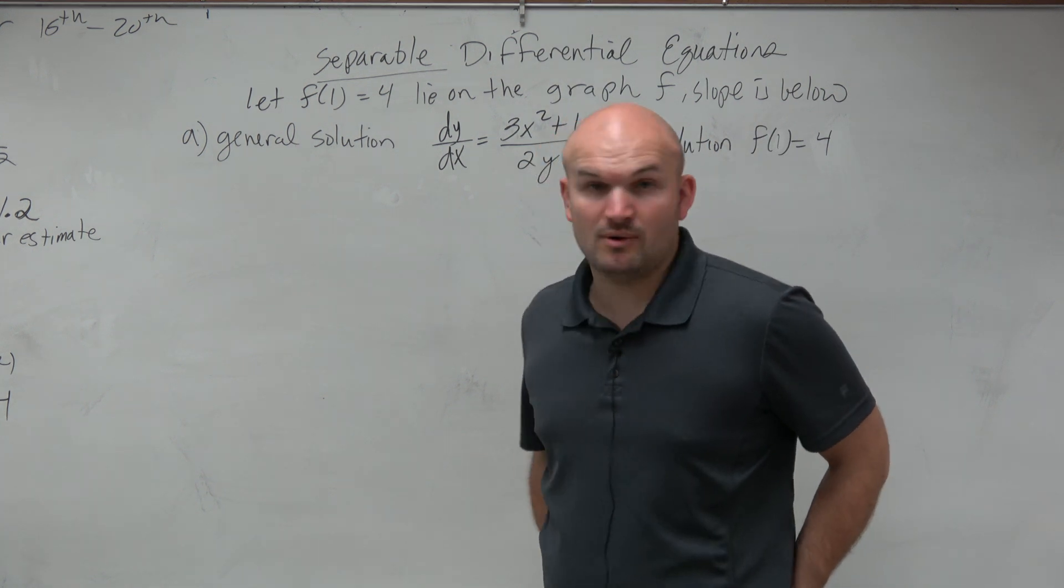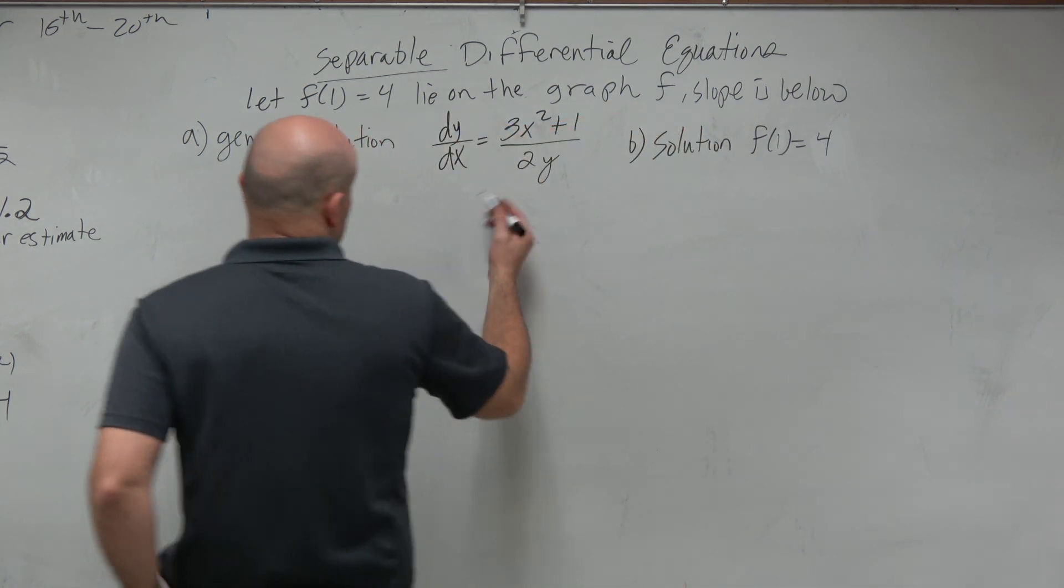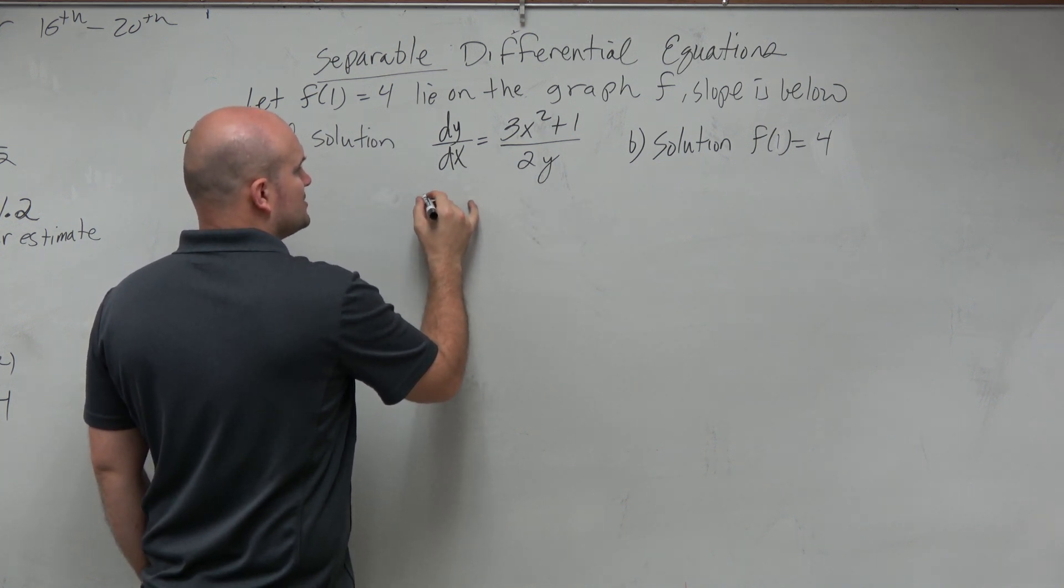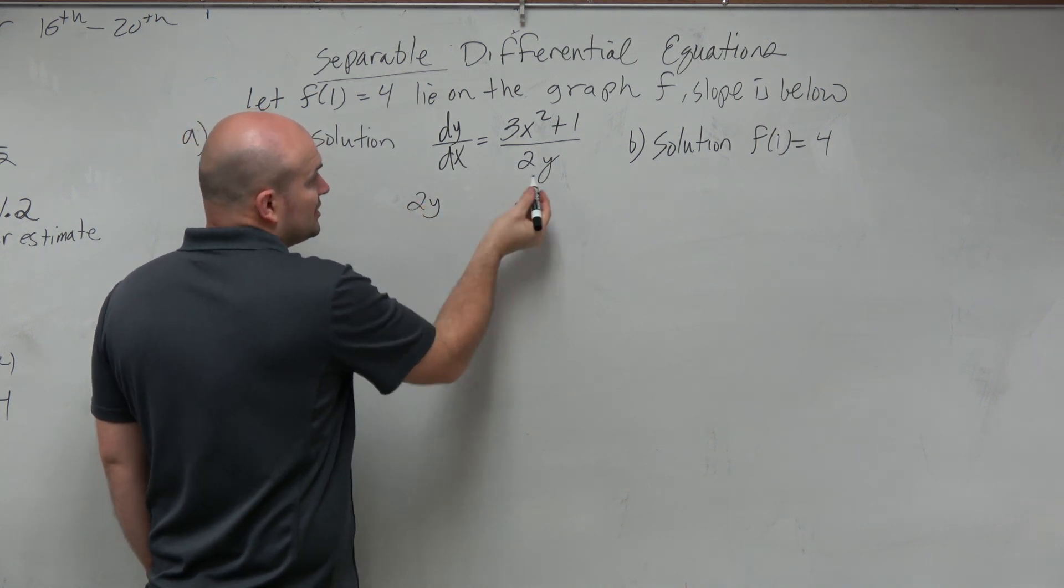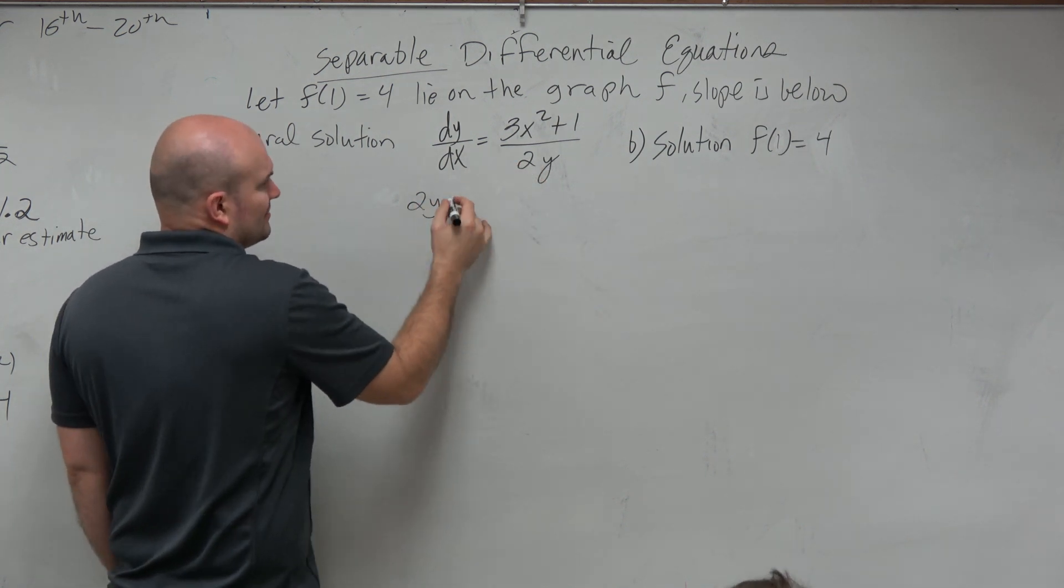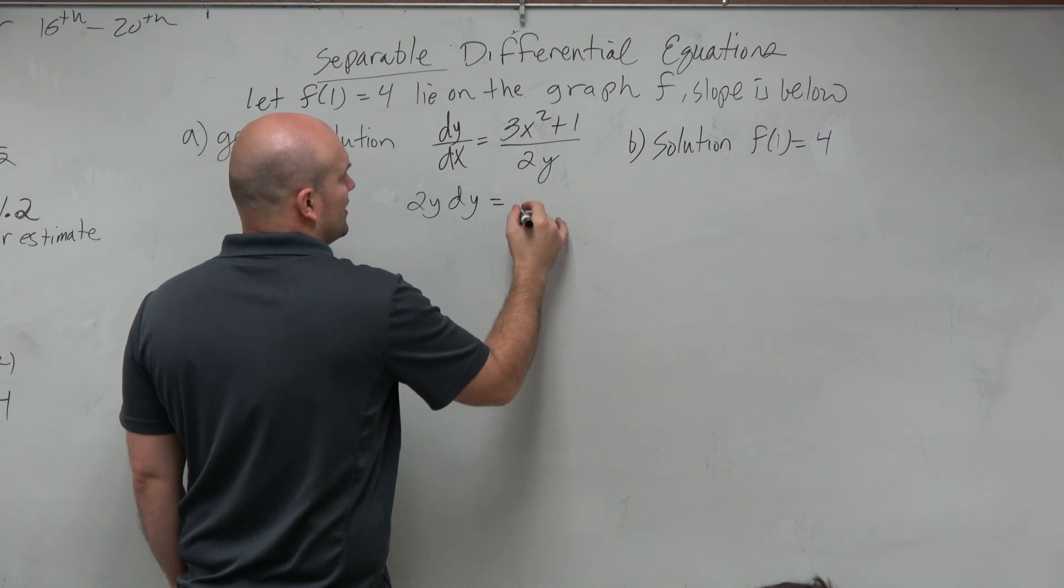And then we could obviously multiply the y on both sides. So when we multiply 2y on both sides, so I have 2y. Now, we could leave the 2 over here if we wanted to, we could just multiply by y. But I don't really see it being any of an advantage.